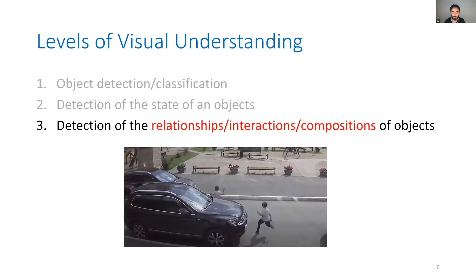Another problem is about relationships, interactions, and compositions of objects in a scene. For example, in this image, if we give it to a typical image captioning system, it says 'cars parked in the parking lot.' But that's not what's happening here — a kid is running in front of a car; it's a dangerous situation. Our models are unable to understand this right now, and this is a very interesting problem to solve with huge value.